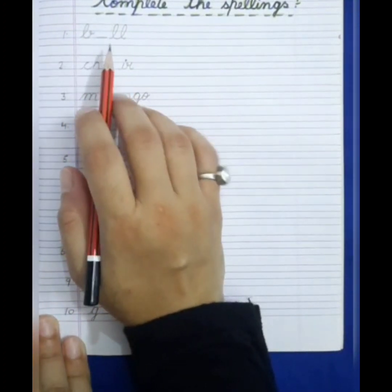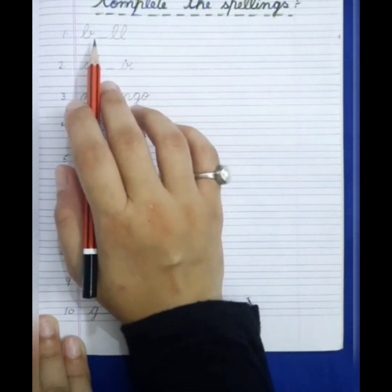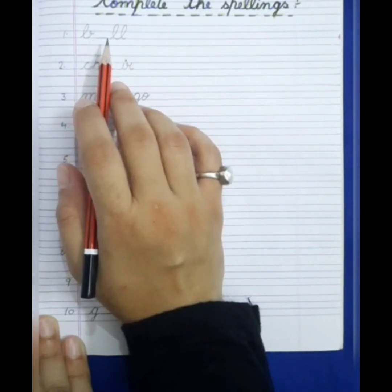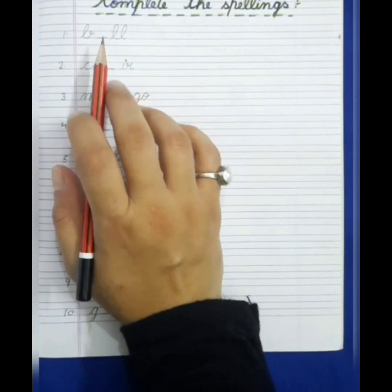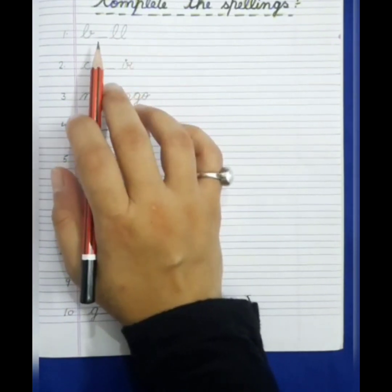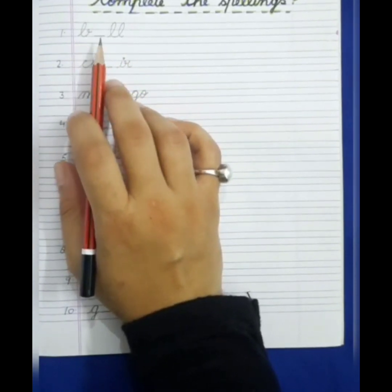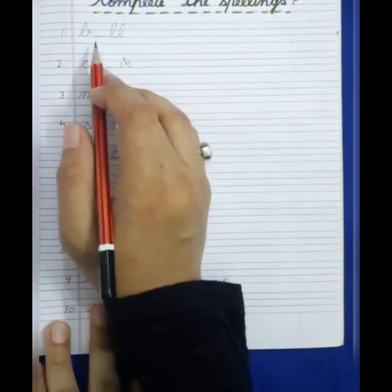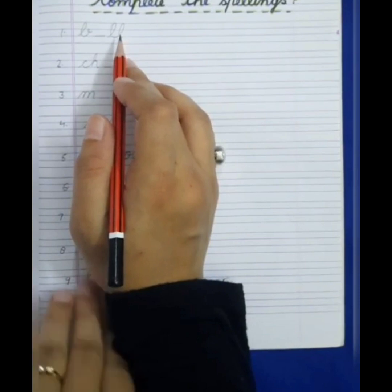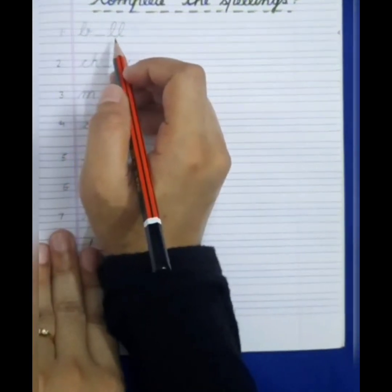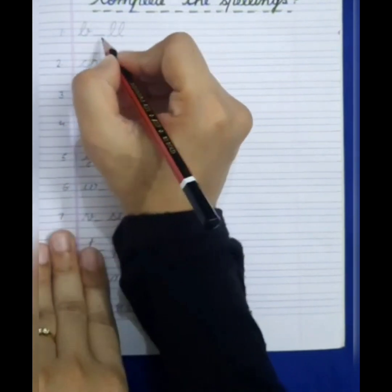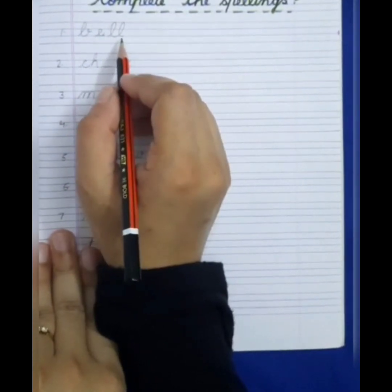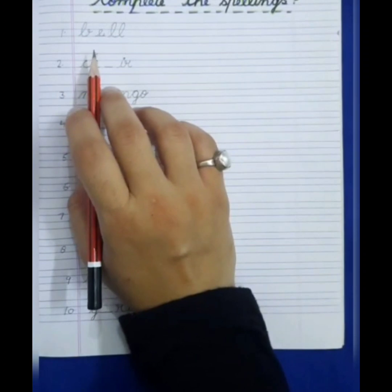We will complete these spellings by filling all the blanks. First spelling is B dash double L. This spelling can be ball, bill, or bell. If we write A then B-A-L-L ball, if we write I then B-I-L-L bill, and if we write E then B-E-L-L bell. So A, E, or I — all are correct. I am writing E: B-E-L-L, bell. So first spelling is bell.